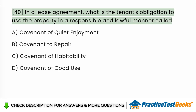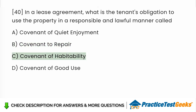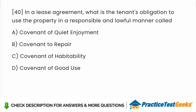In a lease agreement, what is the tenant's obligation to use the property in a responsible and lawful manner called? a. Covenant of Quiet Enjoyment. b. Covenant to Repair. c. Covenant of Habitability. d. Covenant of Good Use. Answer: d. Covenant of Good Use.